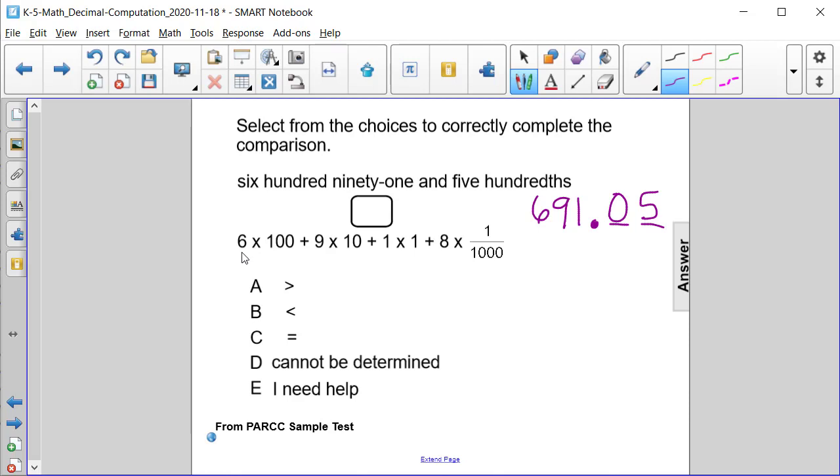Now let's convert our bottom number from expanded form into standard form. We have 6 times 100, which is 600. We have 9 times 10, which is 90, and we're adding 1 times 1, which is 1, and we're starting with fractions. That's why they go to the right of the decimal point.